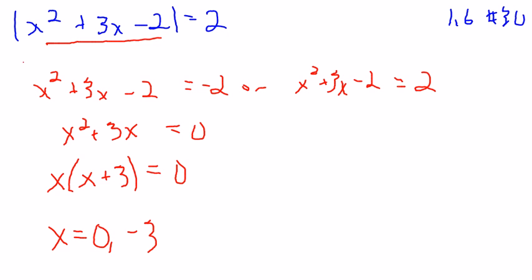Just plug them in in your head here. With the 0, I get 0, 0, negative 2. Take it to absolute value, it gives me that 2. With the negative 3, I get 9, minus 9, minus 2. 9's cancel, give me the same thing, so it works. So those guys work.